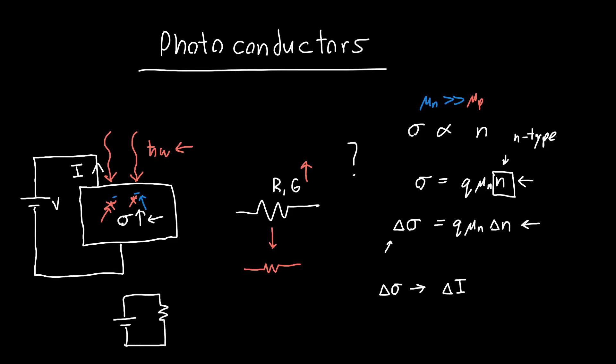We're connecting a voltage source to a resistor and that resistance is changing or the conductance is changing. Initially it might have been G_0, and it's going to be G_0 plus some delta G term when we apply light.